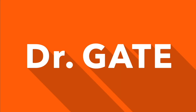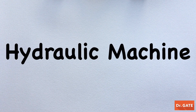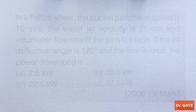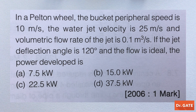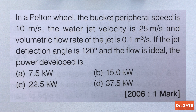Hi guys, Dr. Gridis here. In today's class we are going to solve 7 numericals on Hydraulic Machines. In a Pelton Wheel, the bucket's peripheral speed is 10 meter per second, the water jet velocity is 25 meter per second, and the volumetric flow rate of the jet is 0.1 meter cube per second. If the jet deflection angle is 120 degrees and the flow is ideal, the power developed is what we have to find.